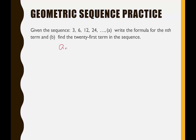Our formula: a sub n is equal to a sub 1 times r to the n minus 1. When writing the formula, we leave a sub n and n as variables, and fill in a sub 1 and r. A sub 1, the first term, is 3. The common ratio: from 3 to 6 we multiply by 2; 6 to 12, multiply by 2; 12 to 24, multiply by 2. So r equals 2. The formula is: a sub n equals 3 times 2 to the n minus 1.